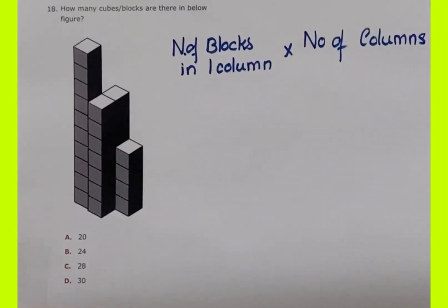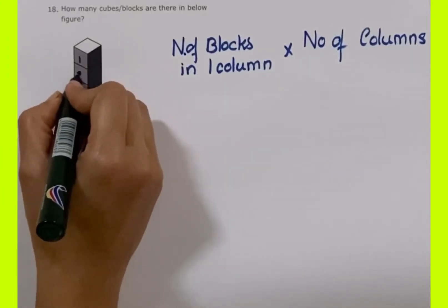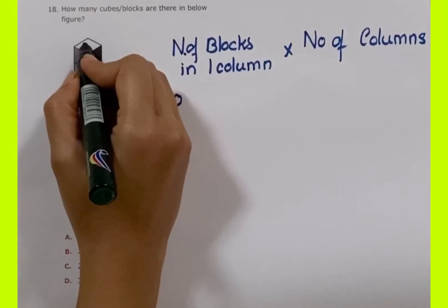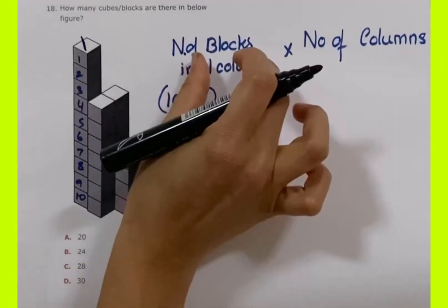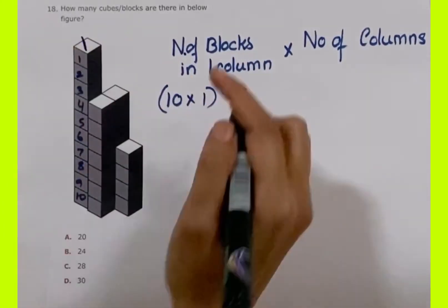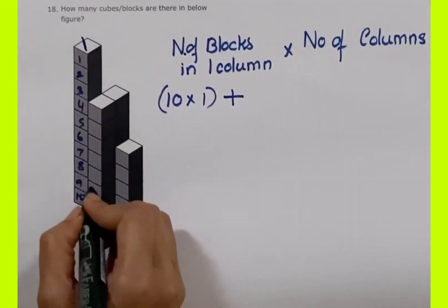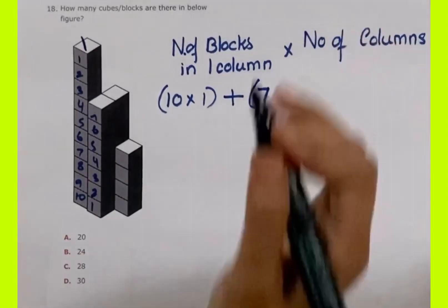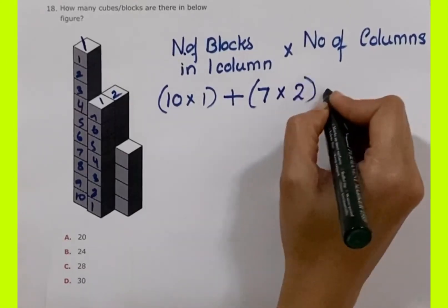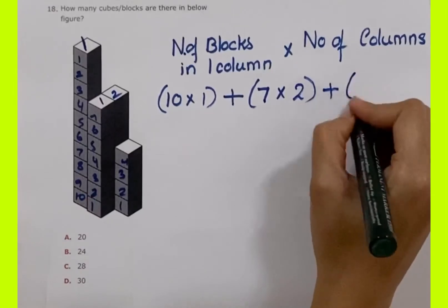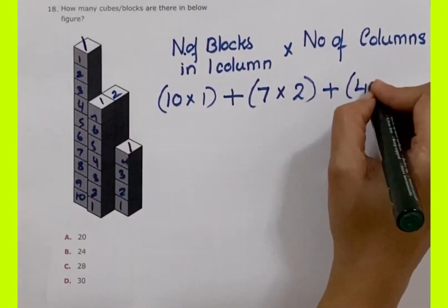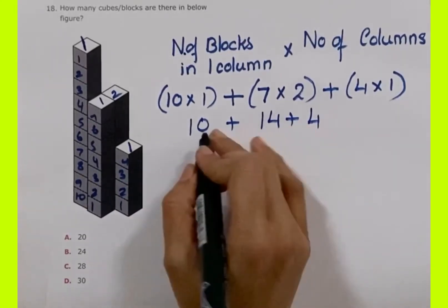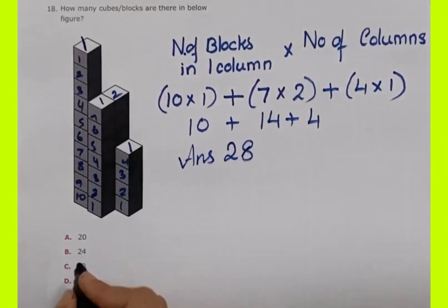Now let's count the cubes in this figure. In one column: 1, 2, 3, 4, 5, 6, 7, 8, 9, 10 — so 10 cubes, with 1 column: 10 into 1. For the remaining cubes: 1, 2, 3, 4, 5, 6, 7 — so 7 cubes in 2 columns: 7 into 2 is 14. Then: 1, 2, 3, 4 — so 4 cubes in 1 column. Summation: 10 plus 14 plus 4 equals 28. The answer is option C, 28.